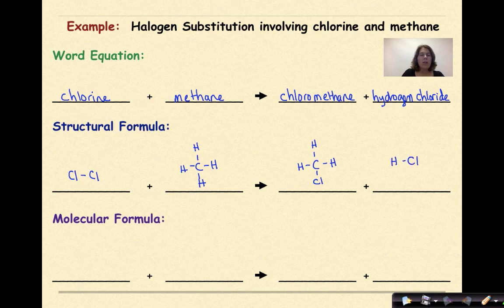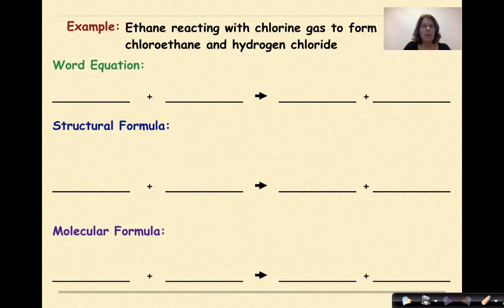The molecular formula here for chlorine would be Cl2. Methane is CH4. Chloromethane is CH3Cl. And hydrogen chloride is HCl. Let's look at another example.